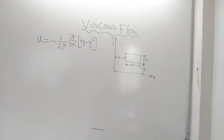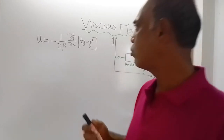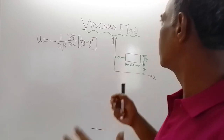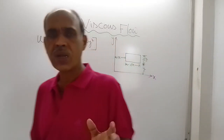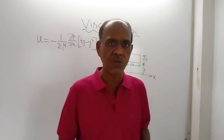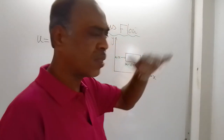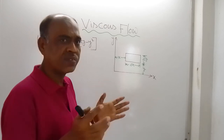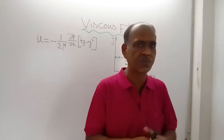Good morning. Again I have come back with the same topic. Last class I showed you the velocity distribution for the flow of viscous fluid between two parallel plates where both the plates were held fixed — they were not moving at all. Fluid was flowing between the plates, and the effect of viscosity was considered during the derivation of the flow.